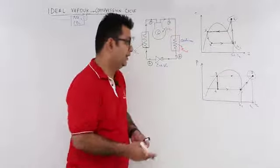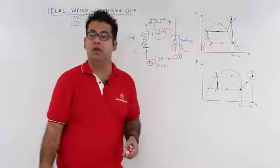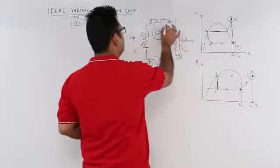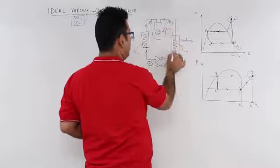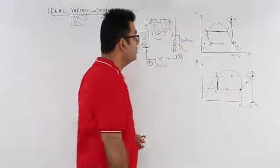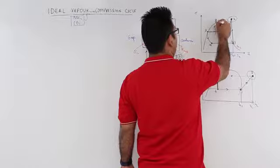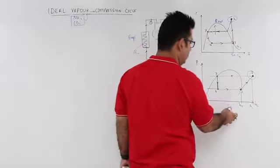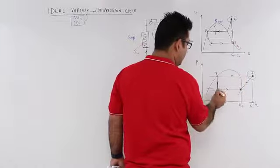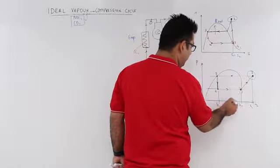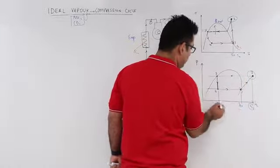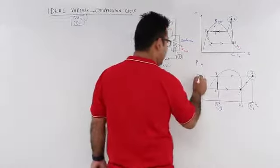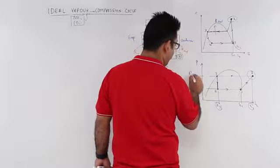From state 2 to 3 you pass through the condenser, so you lose some heat to the surroundings — this is Q out. This is also evident from the PH diagram: the enthalpy drops from H2 to H3, meaning you have lost heat, but at constant pressure.